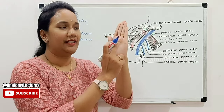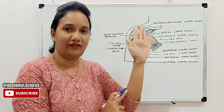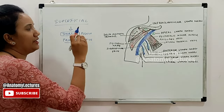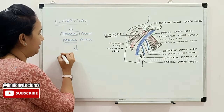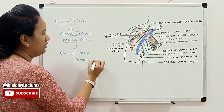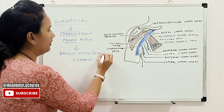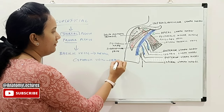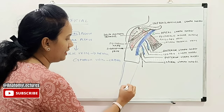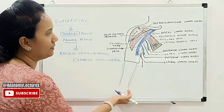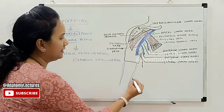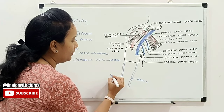We have two veins in the upper limb. The superficial group of lymphatics accompany the veins. Along the lateral aspect, you have the cephalic vein, and along the medial aspect, you have the basilic vein. These two plexuses, after collecting the lymph, will travel along the basilic vein medially and the cephalic vein laterally.